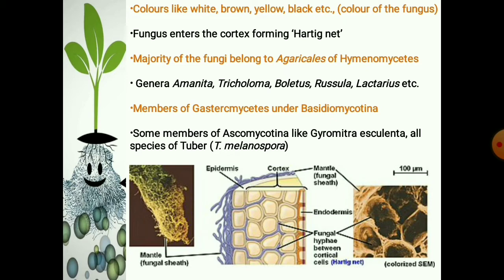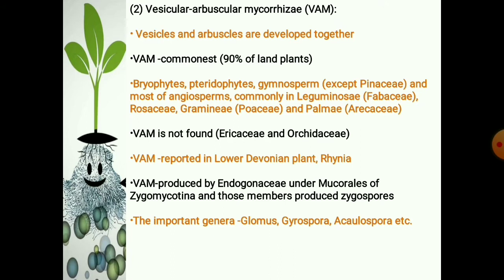This picture shows the ectomycorrhizal association with the plant. The next type is vesicular arbuscular mycorrhizae, simply called VAM. It is a type of endomycorrhizal association where both vesicles and arbuscules are developed together. VAM is by far the commonest of all mycorrhizae and has been reported in more than 90% of land plants. They are found in bryophytes, pteridophytes, gymnosperms, and most angiosperms, commonly in Leguminaceae, Rosaceae, Graminae, and Palmae.